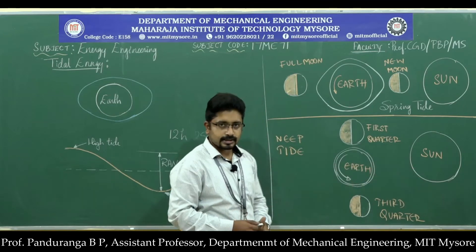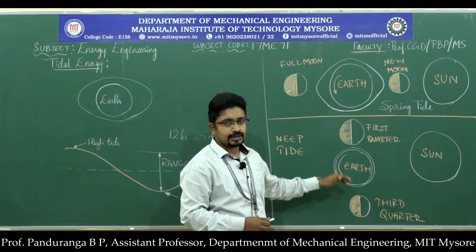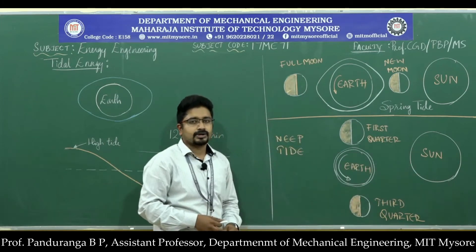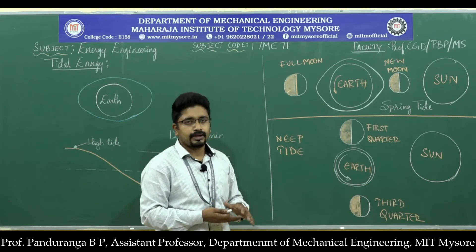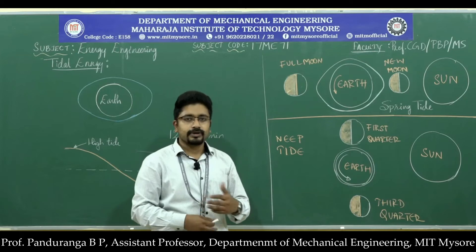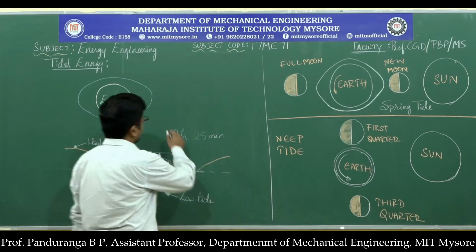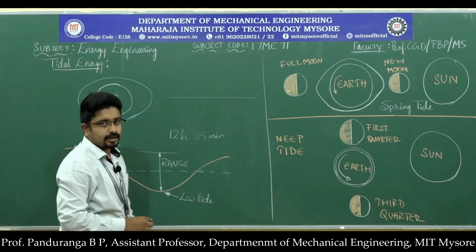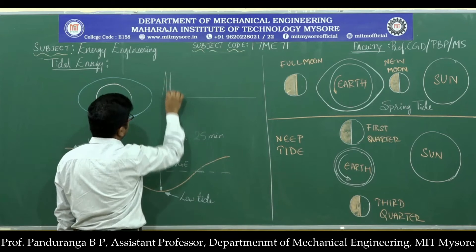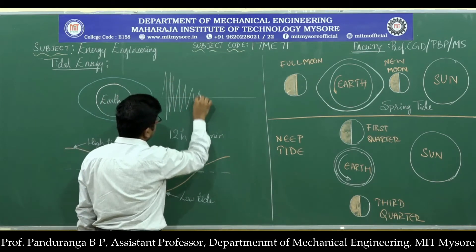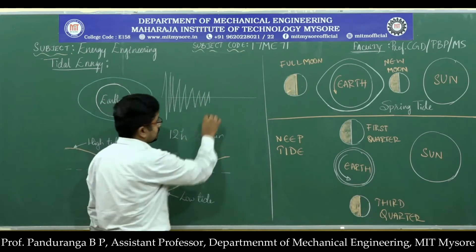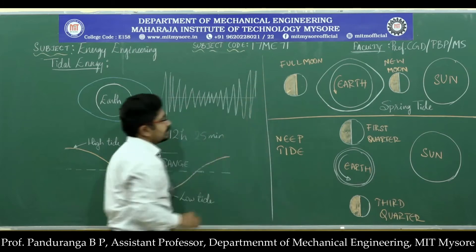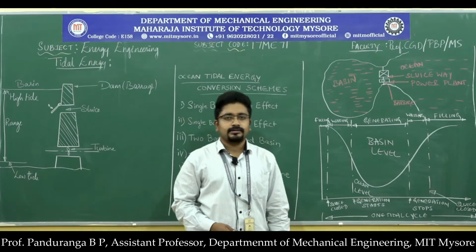During the first and third quarter of the moon, the moon, earth, and sun are perpendicular to each other. When they are perpendicular, the forces exerted by the moon and sun are out of phase, so the high tide and low tide will have a very minimum range. This variation occurs twice a month. During full moon and new moon days the range is very high, and as we move towards the first and third quarter the range reduces, then gradually increases again towards the next new moon or full moon.